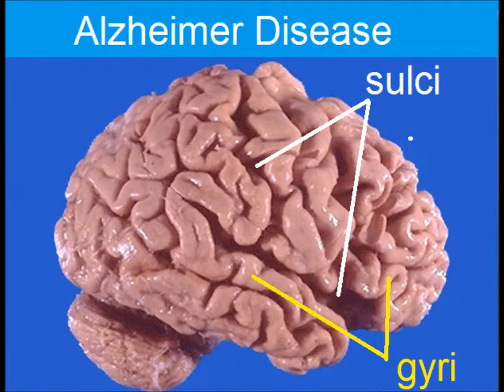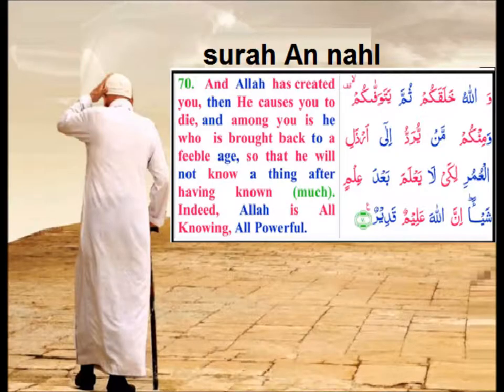This is another specimen from Alzheimer's disease. There are widened sulci and shrunken gyri. Allah says in Surah Nahal that He will turn you back to a feeble age — you must read the Quran yourself.